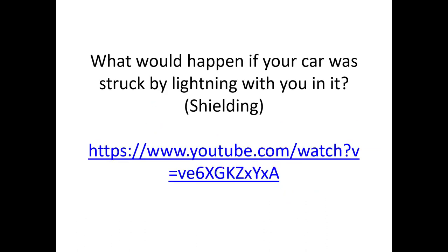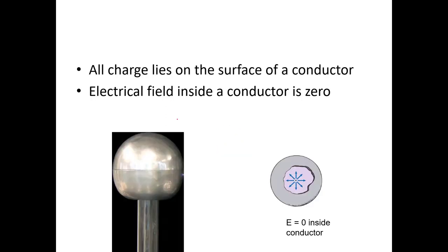Here's a video I'll link on the class page — I want you to watch it. It talks about shielding, and it's pretty cool. You see one of the largest Van de Graaff generators being used to zap a car with a person inside it — he's inside about to get zapped by lightning. When you have a conductive sphere or conductive casing around an object, inside the sphere you have zero electrical field, so you don't have those interactions.